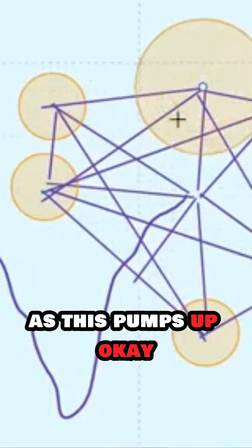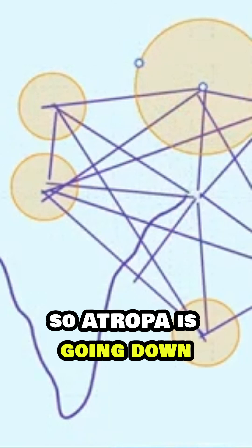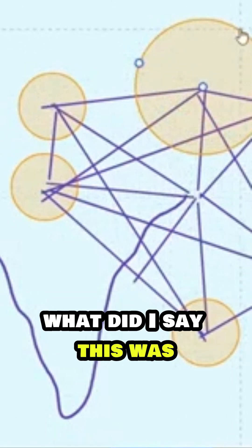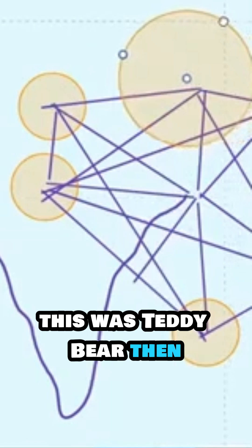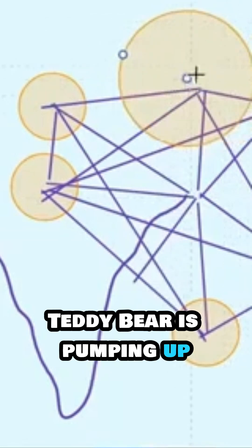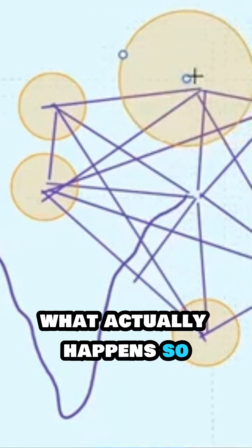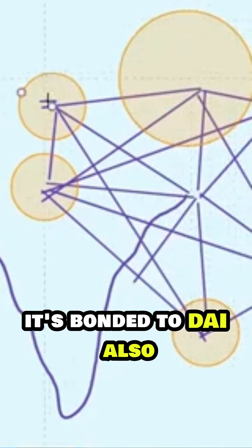As this pumps up, so a trooper is going down and it's pumping into, what did I say this was? I think I said this was teddy bear. Then teddy bear is pumping up. And then what actually happens? So as teddy bear is pumping up, it's bonded to DAI also.